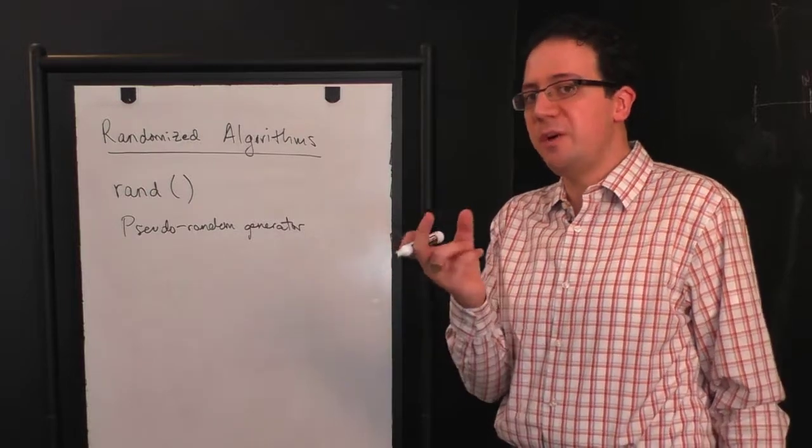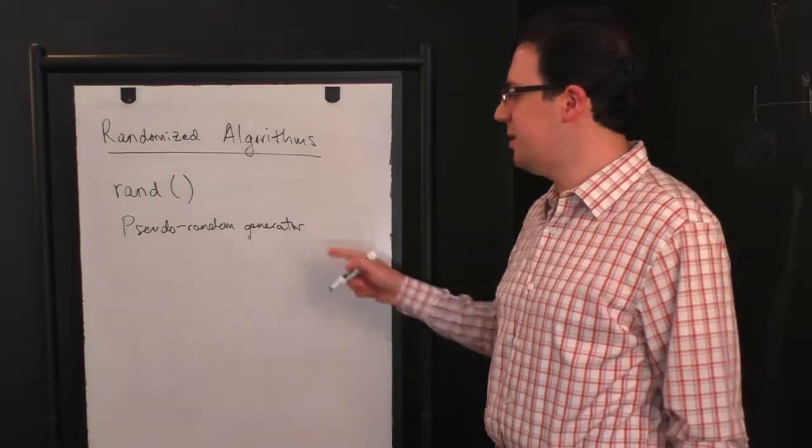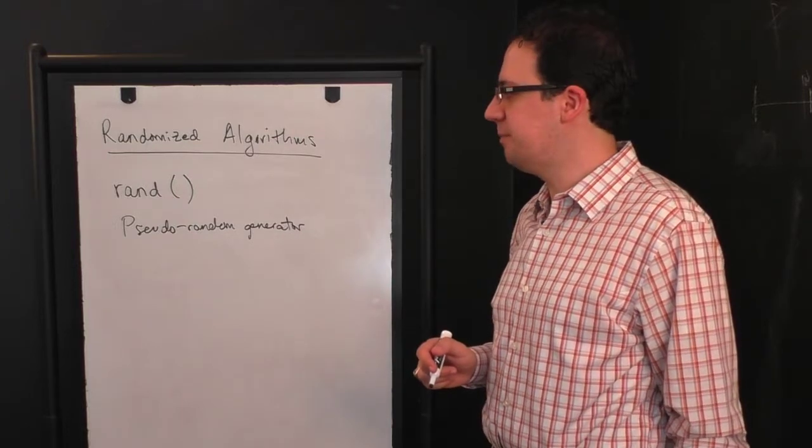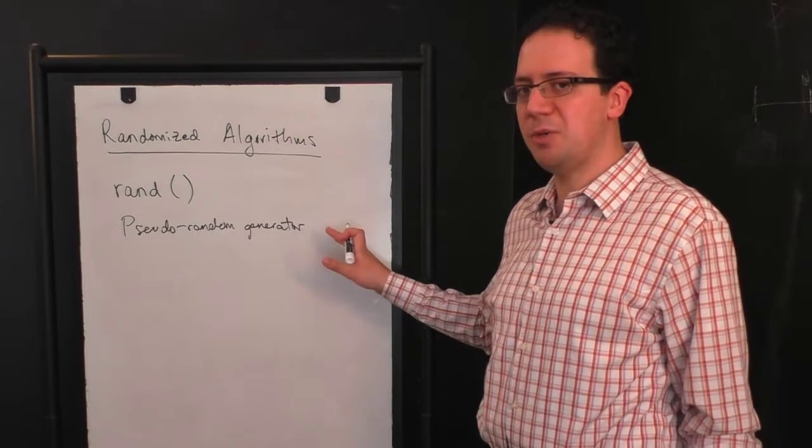But now you just need a very small seed as your source of randomness, and then you have a deterministic algorithm that generates the rest of the randomness. So this is how it actually works in practice.